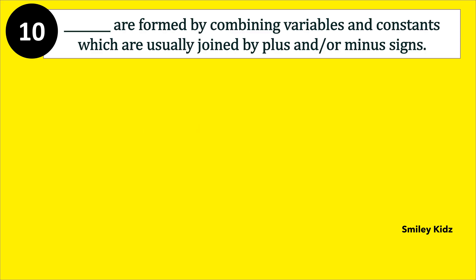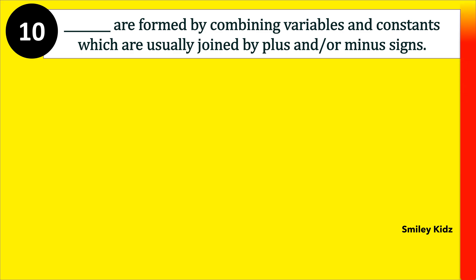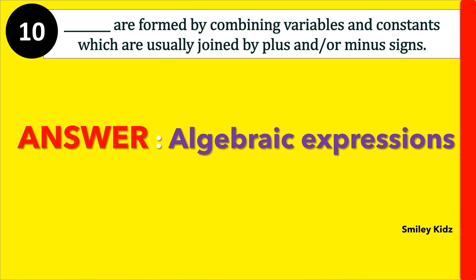Moving to question number 10. Dash are formed by combining variables and constants which are usually joined by plus and or minus signs. The right answer is algebraic expressions. Algebraic expressions are formed by combining variables and constants which are usually joined by plus and or minus signs.